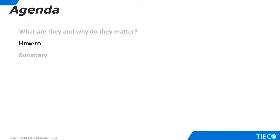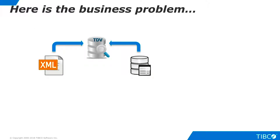Let's walk through a very basic demo of XSLT and streaming transformations. Here is the business problem we illustrate: we have an XML document that contains descriptions of products. We need to flatten this document into a relational structure so that it can be joined with data from an inventory database in order to produce a federated virtual view. We'll use the XSLT and streaming transformation editors to accomplish this.